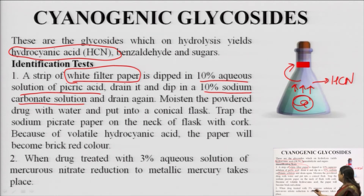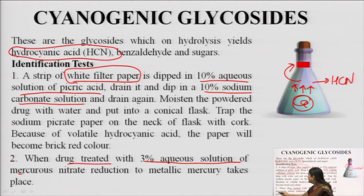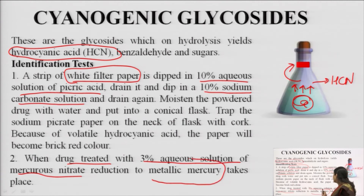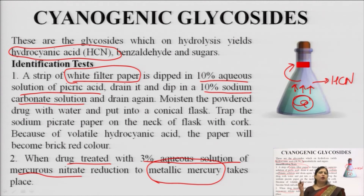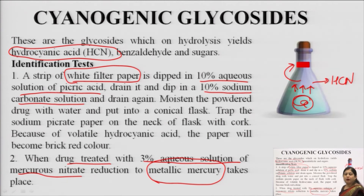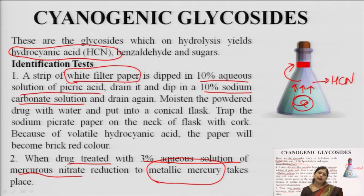The second test for cyanogenic glycosides is when the drug is treated with a 3 percent aqueous solution of mercurous nitrate — precipitation or formation of metallic mercury takes place on top of the mixture. These are the two tests generally done for cyanogenic glycosides. Examples of drugs containing cyanogenic glycosides include bitter almonds, wild cherry bark and apple seeds.